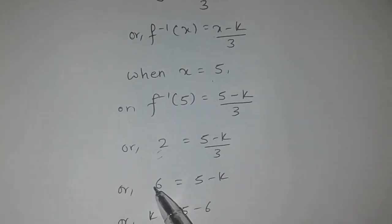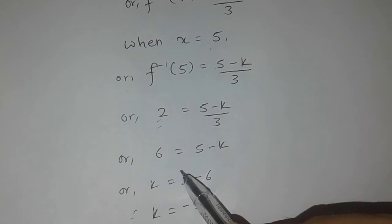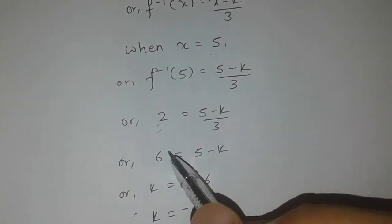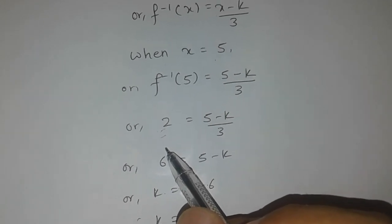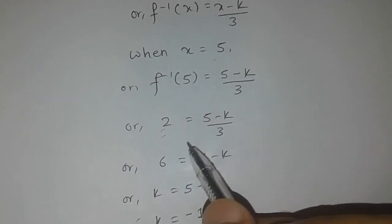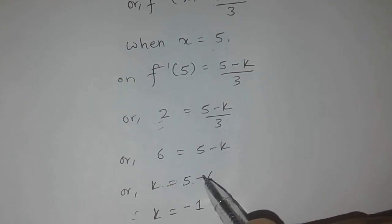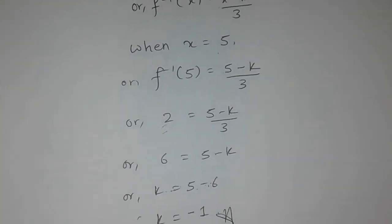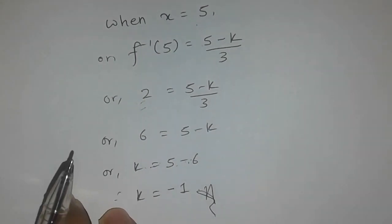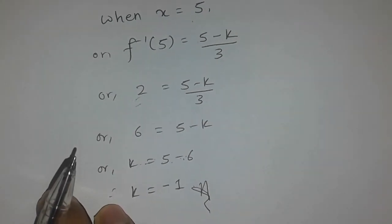So 2 equals 5 minus k divided by 3. Multiplying both sides by 3: 6 equals 5 minus k. Therefore k equals 5 minus 6, which gives us k equals minus 1.